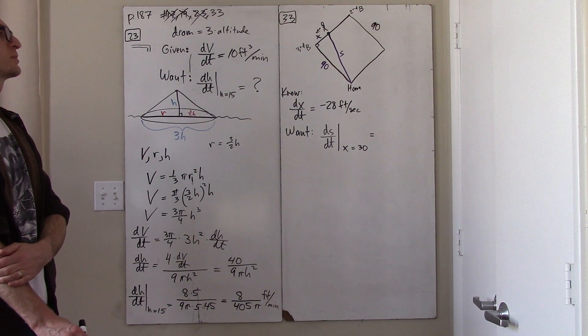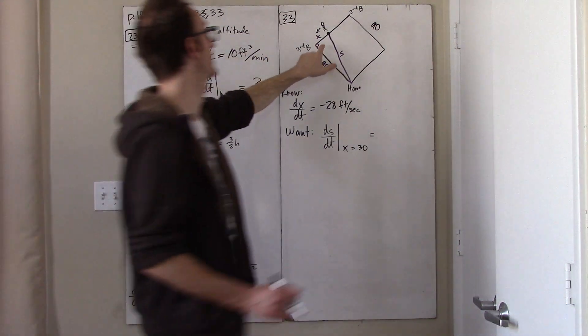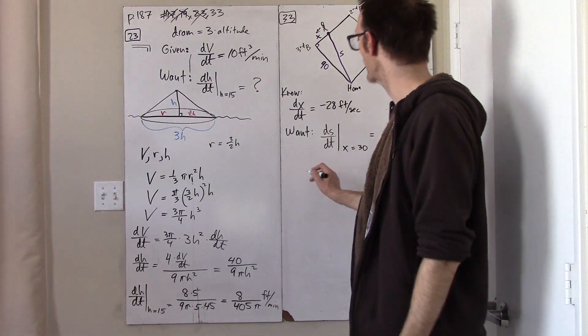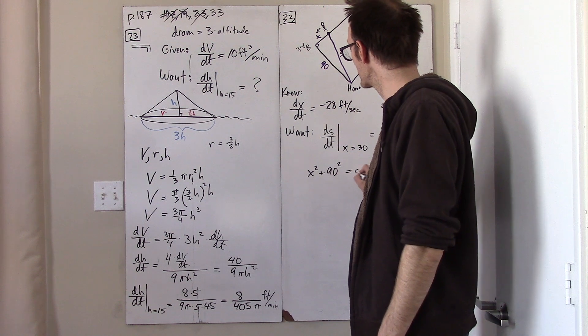Find the static relationship between the variables. But I think here the static relationship between the variables is obvious. It's just the Pythagorean relationship for the three sides of this right triangle. And so we get, x squared plus 90 squared is s squared.